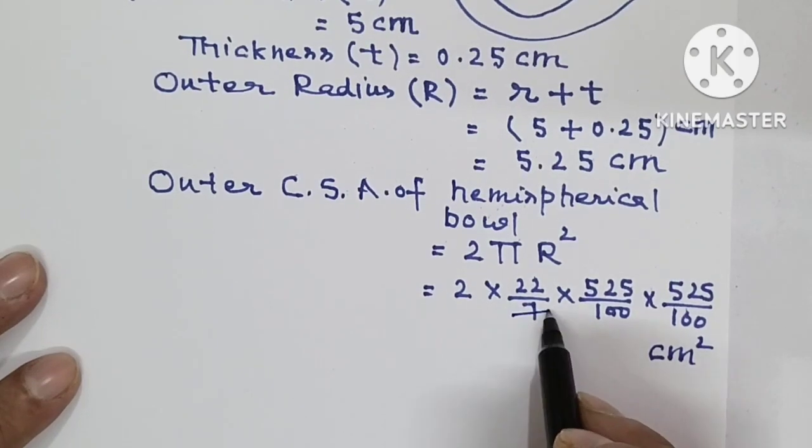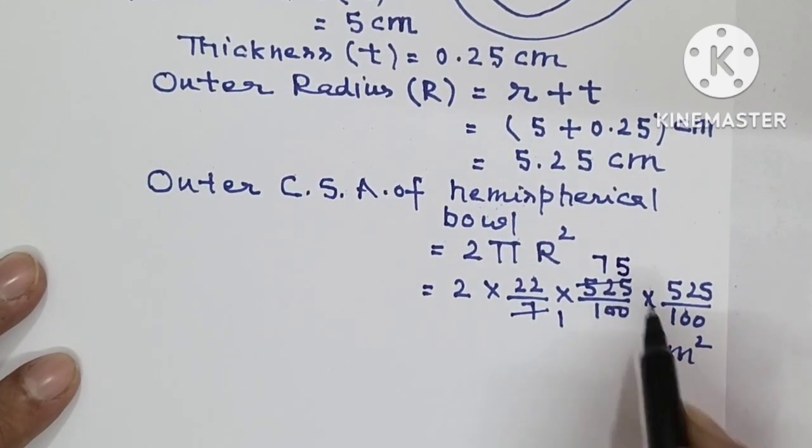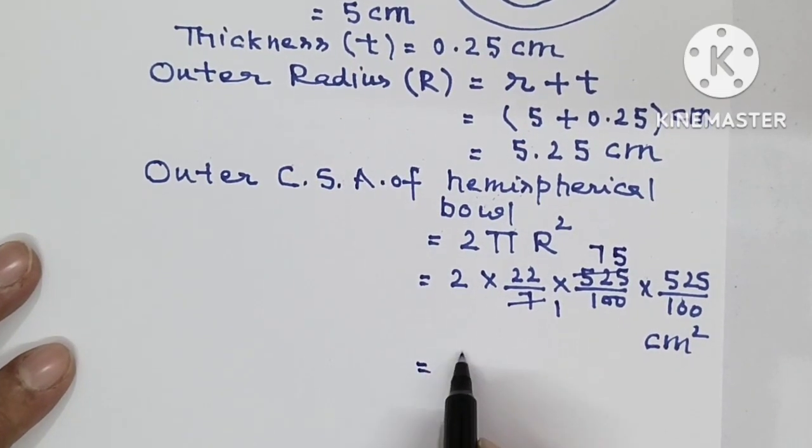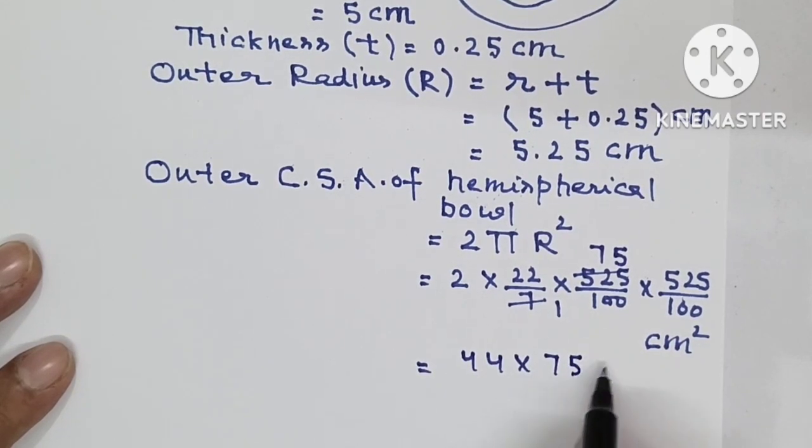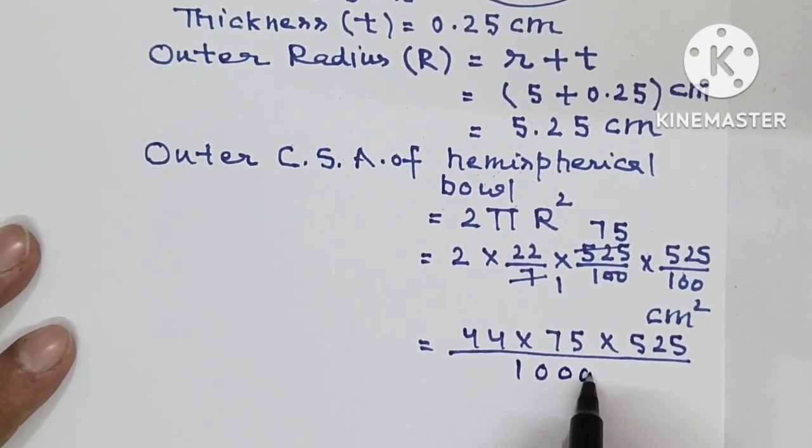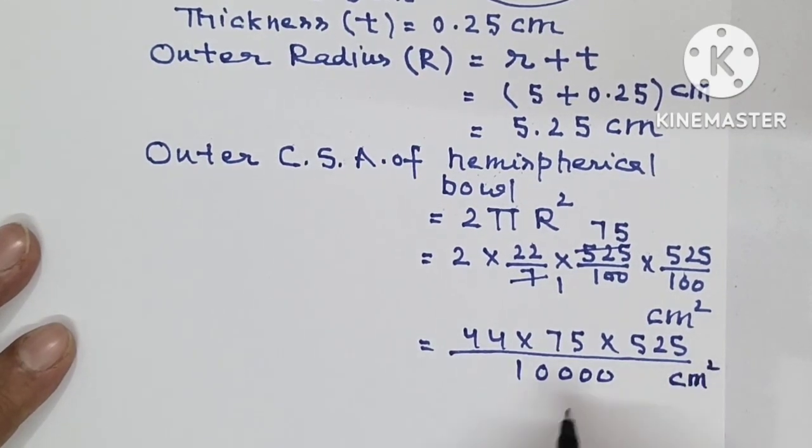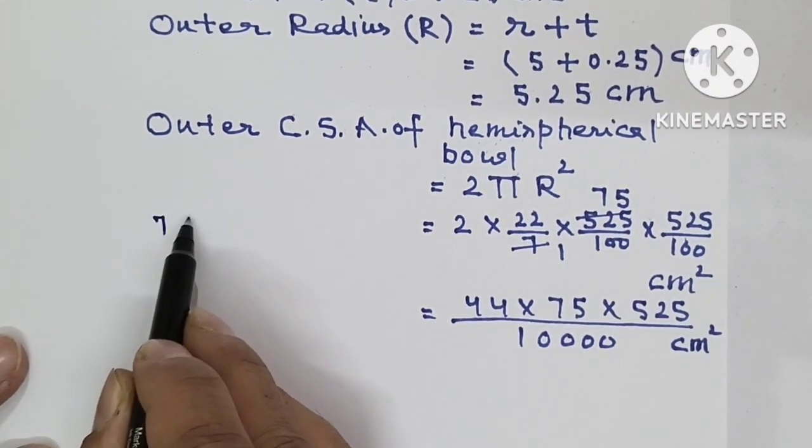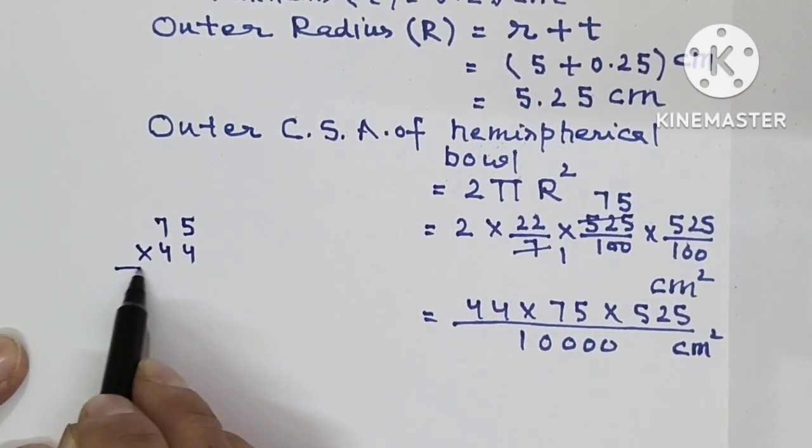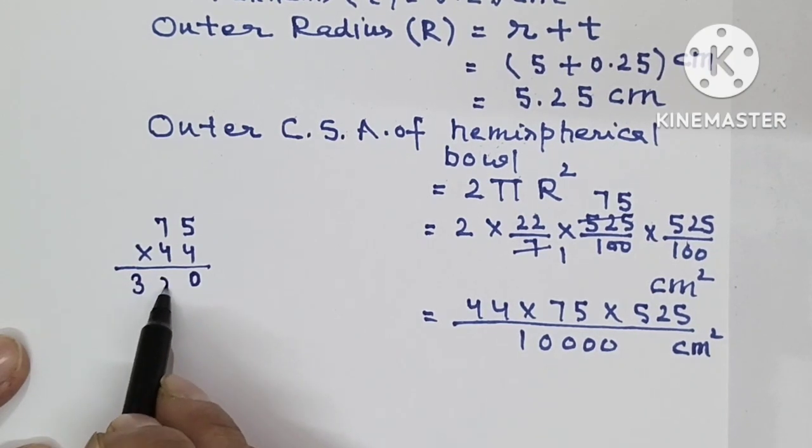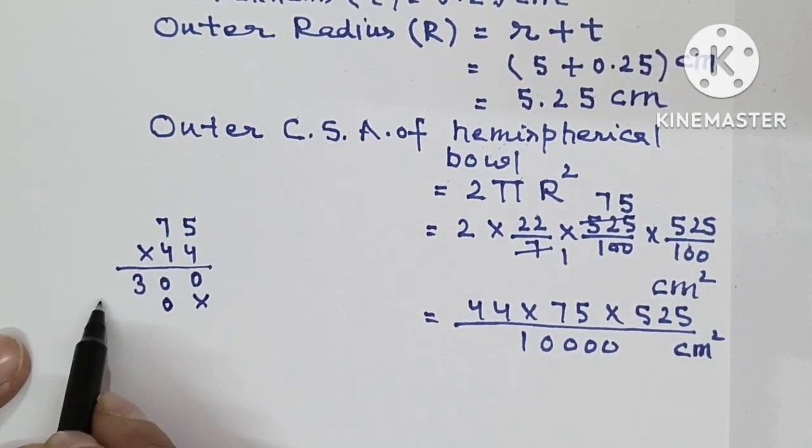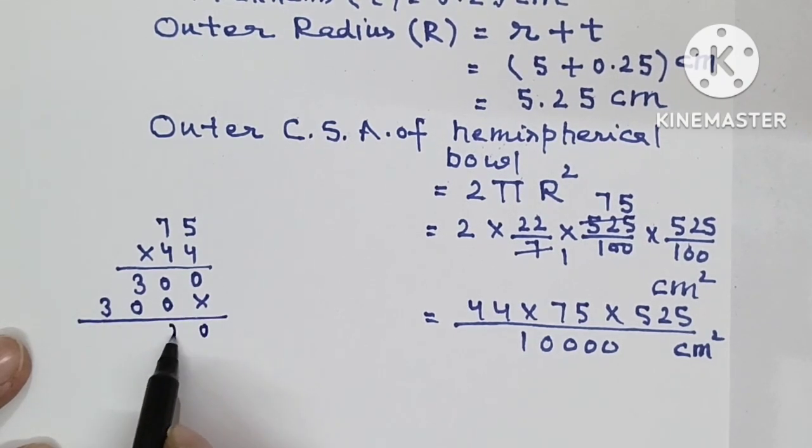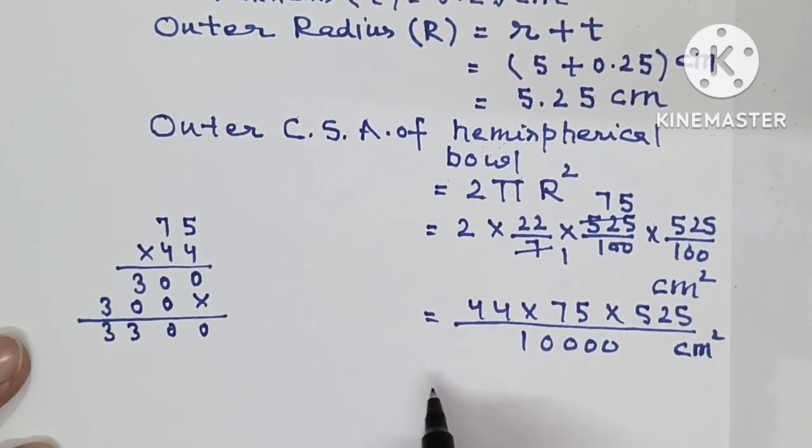Do not try to cancel because if you have 10, 100, 1000 in the denominator, it becomes easy calculation. You will be multiplying 75 into 44. 4 fives are 20, 2 is the carry. 4 sevens are 28 and 2, 30. Then 4 fives are 20, 2 is carry. 4 sevens are 28 and 2, 30. So we get 3300.